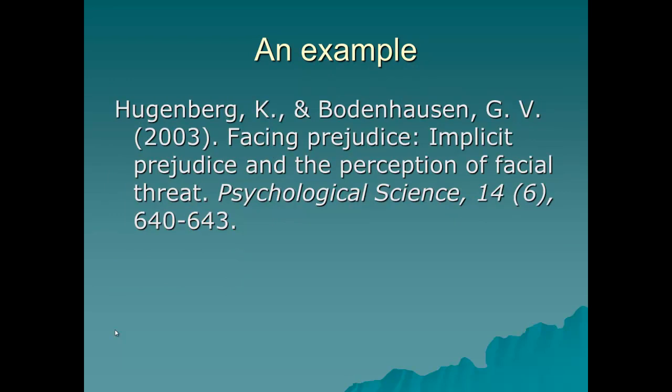So let's move on to an example: Hugenberg and Bodenhausen, Facing Prejudice. This slide is in APA-style for an end reference. We have the authors' last names, first initials. We have the title of the article with only the first letter of the sentence capitalized. Notice that we consider a colon a period, so that implicit is capitalized. Psychological Science, the name of the journal, is capitalized also, both words, and italicized or underlined, as is the issue number and volume number. The volume number is 14, and it was in the sixth issue. Finally, we have the page numbers, a three- or four-page article.